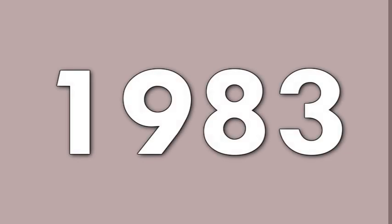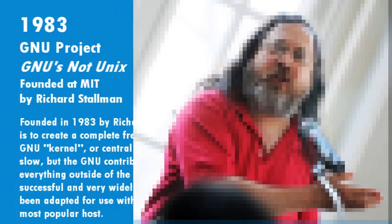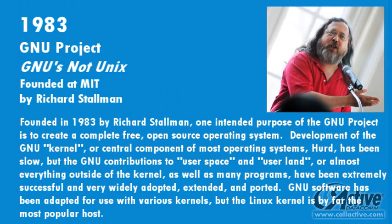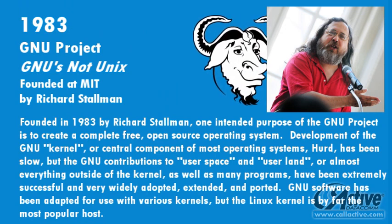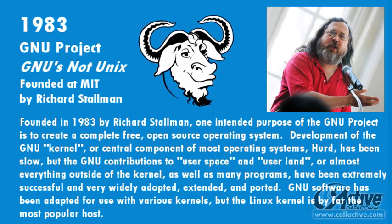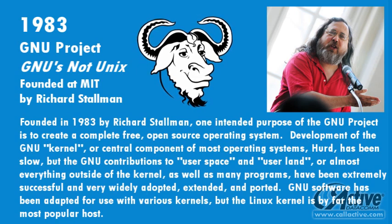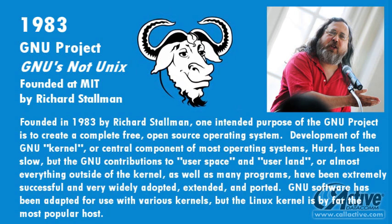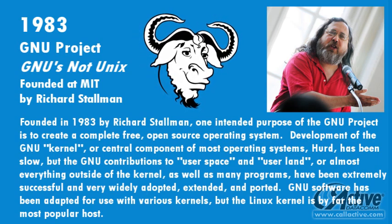Founded in 1983 at MIT by Richard Stallman, one intended purpose of the GNU project is to create a complete free, open source operating system. Development of the GNU kernel, Hurd, has been slow, but the GNU contributions to almost everything outside of the kernel, as well as many programs, have been extremely successful. GNU software has been adapted for use with various kernels, but the Linux kernel is by far the most popular host.